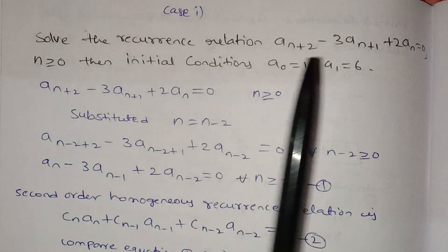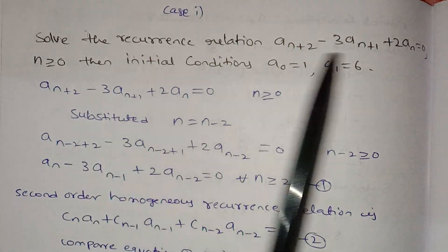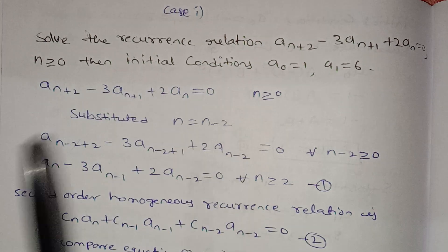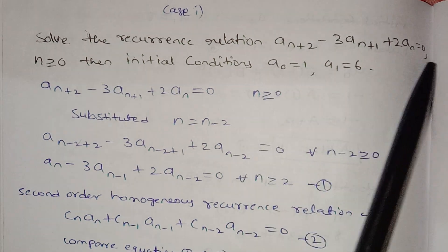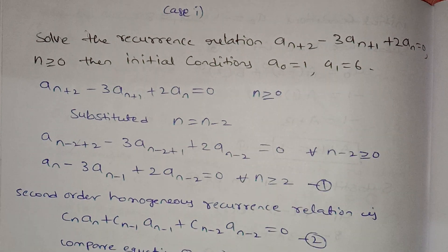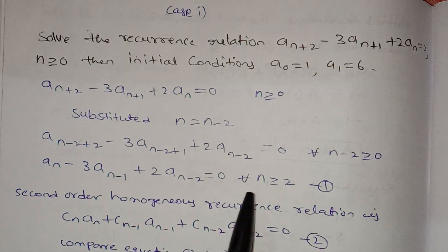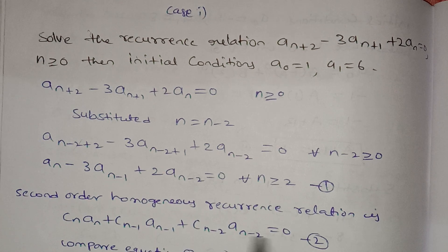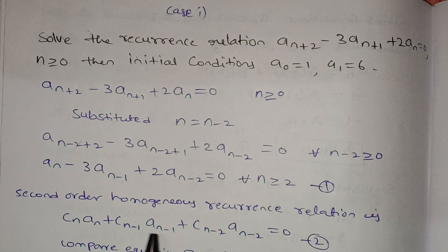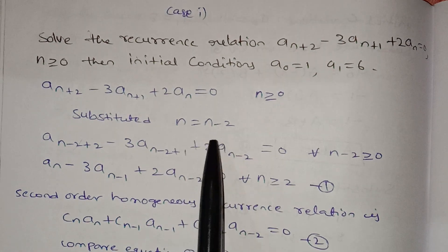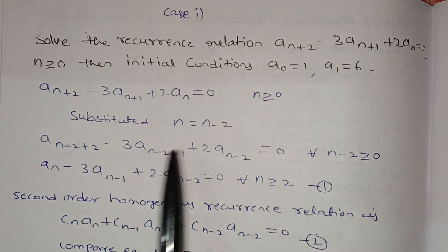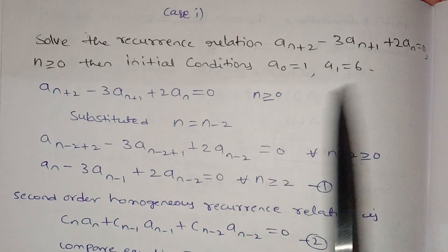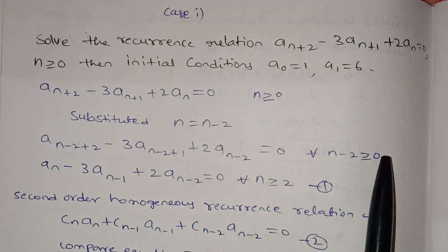Now, a(n+1) minus 3a(n+1) plus 2a(n), n greater than or equal to 0. We substitute n-2 in place of n. We get a(n-2+2) minus 3a(n-2+1) plus 2a(n-2) equals to 0, for all n-2 greater than or equal to 0.